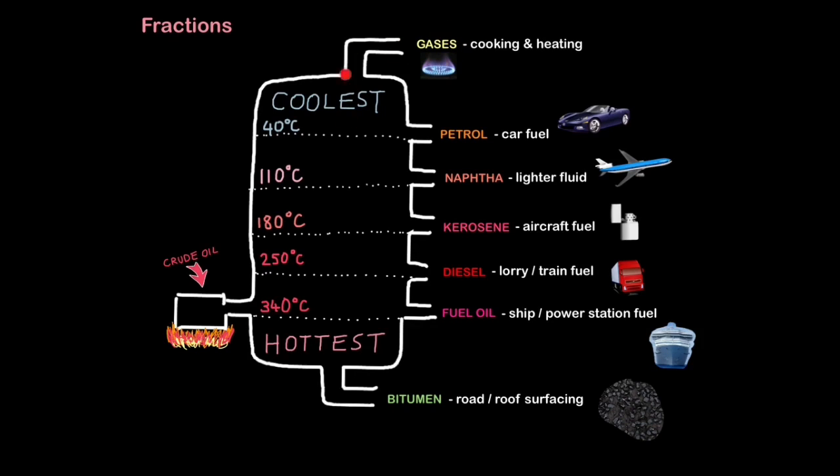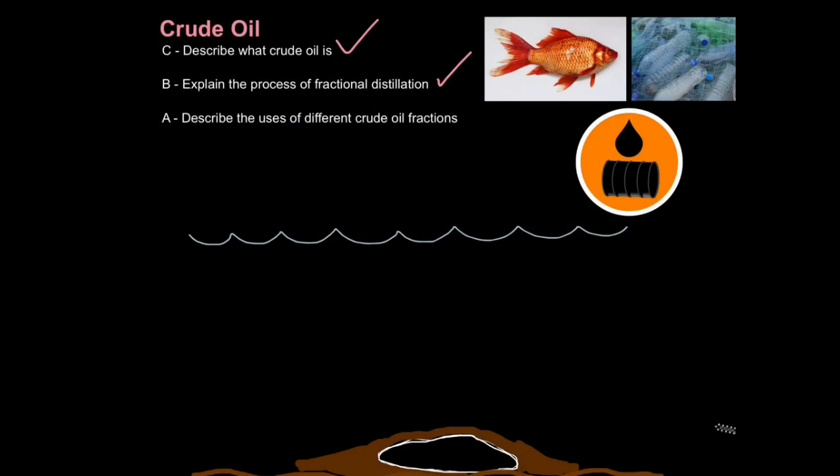All you need is a good memory and a bit of patience. So we have gases which basically come off the top and they can be used in cooking and heating. You have petrol, I'm sure you'll remember that because we use it as car fuel. If we go down and remember the chain length is getting longer as we go down. Next we have naphtha which is lighter fluid, it can be used for other things as well but the main use which you would know is lighter fluid. Kerosene is aircraft fuel, diesel is used for fuel for trains and lorries, fuel oil for ships and power station fuel, some power stations not all, and bitumen which we use as road tar and roof surfacing. I mean you can just pause and write these down if you want. It's just a matter of memory but that's it. So now you can describe the uses of different crude oil fractions. Done.